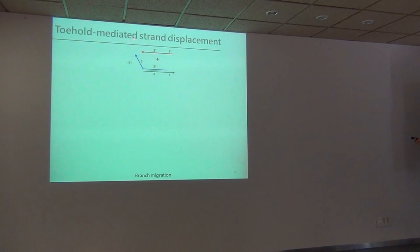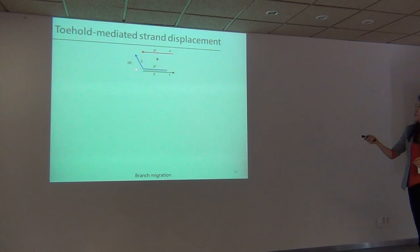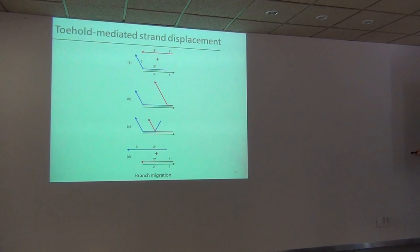I will give you a short introduction to this process, called toehold-mediated strand displacement. We need three DNA strands and sequence engineering. Initially, the blue strand is partially complementary with the green strand but not fully. Then we add the red strand, which through branch migration can gradually replace the blue strand and become fully hybridized with the green strand. With this toehold-mediated strand displacement we can drive the hybrid plasmonic system in many dynamic ways.